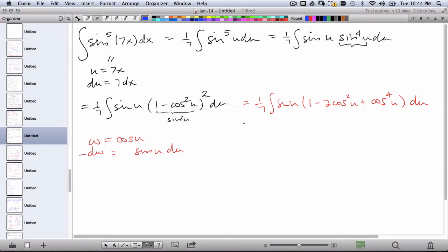So let's perform this substitution. So 1/7th and the sine u du is going to be negative dw. Now, this negative, I'm just going to bring out in front. Now I have 1 minus 2. Instead of cosine squared, it's going to be just w squared plus w to the fourth.